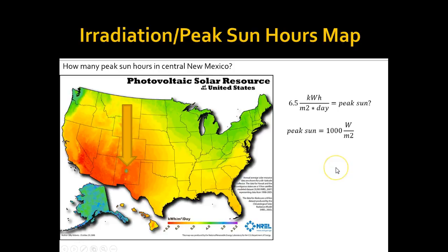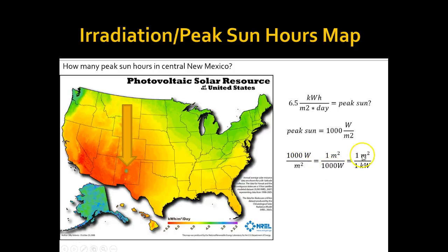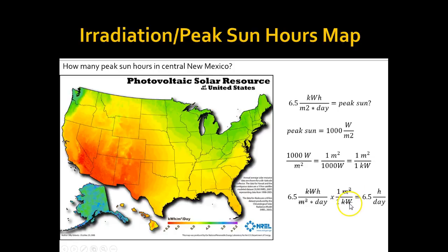So 1,000 watts per meter squared is the same thing as saying 1 kilowatt per meter squared. And since 1,000 watts is equal to 1 kilowatt, 1,000 watts per meter squared is equivalent to 1 kilowatt per meter squared. All you have to do is take your 6.5 kilowatt hours per meter squared per day and multiply by the peak sun condition of 1 meter squared per kilowatt. The kilowatts cancel out, the meter squared cancels out, and you're left with hours per day.